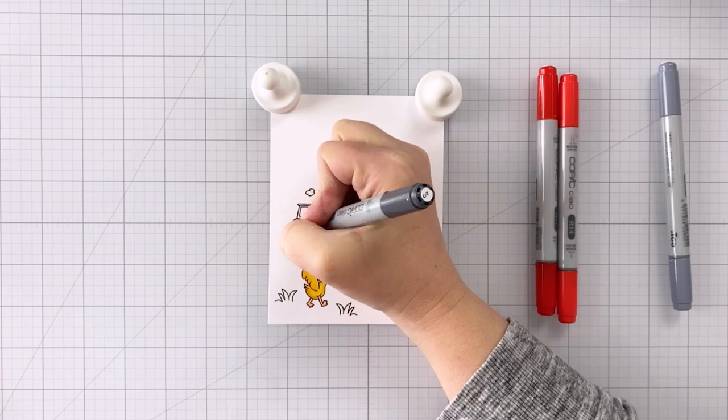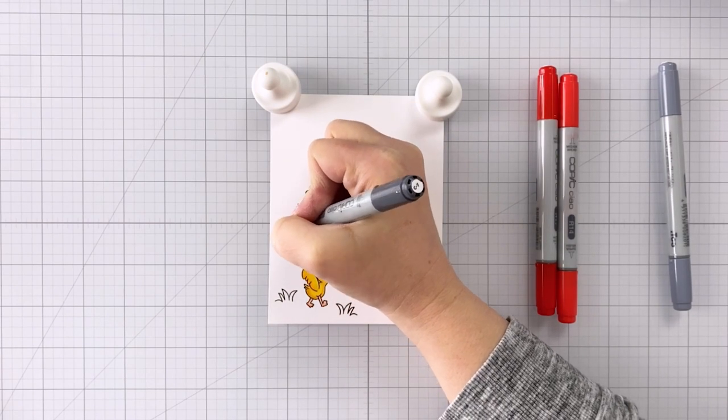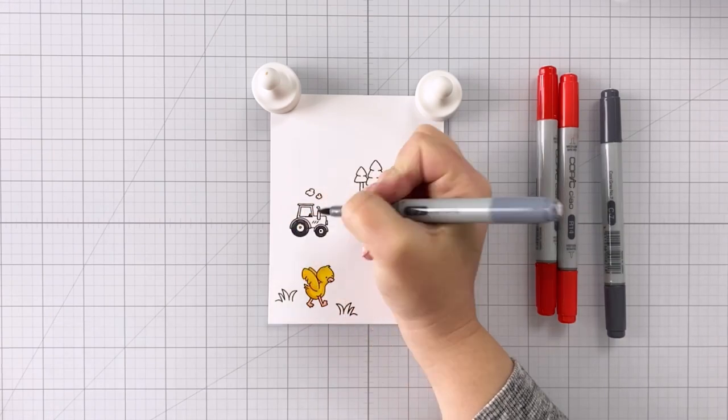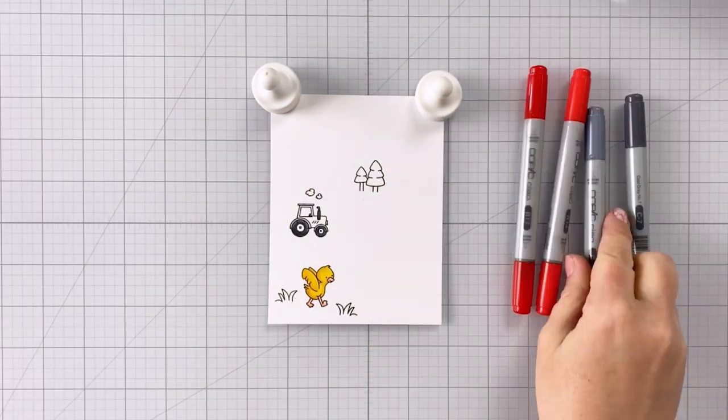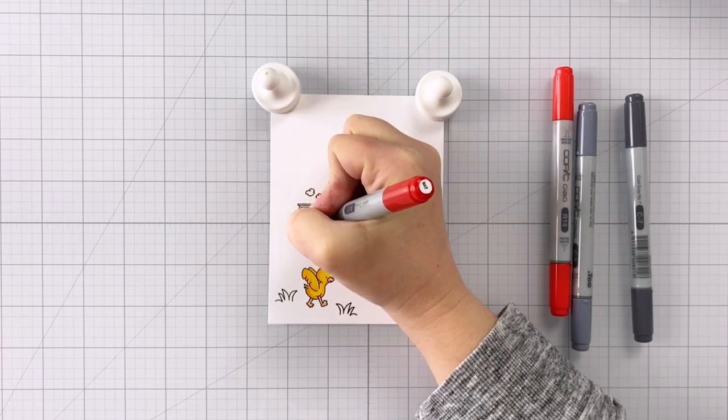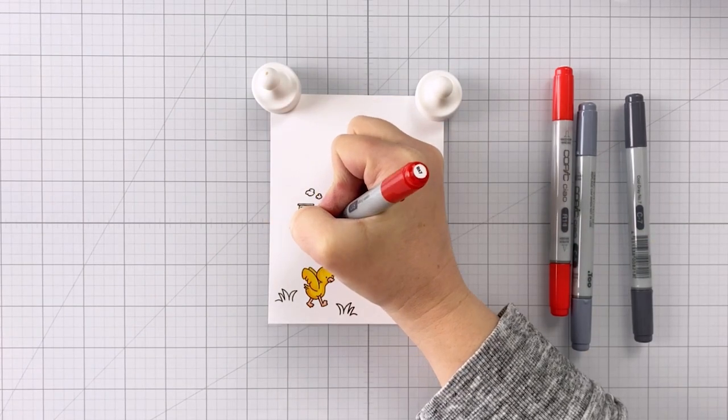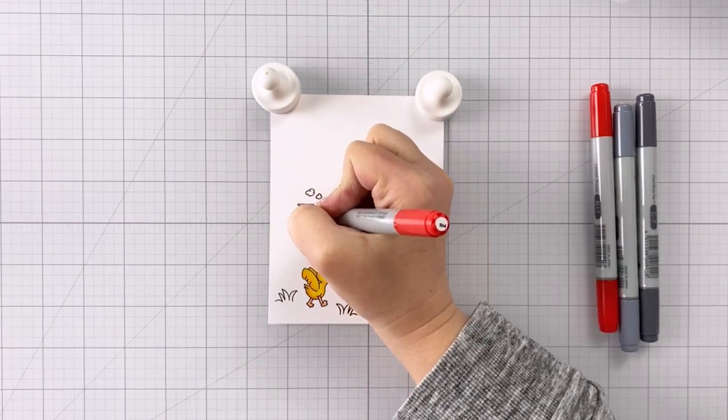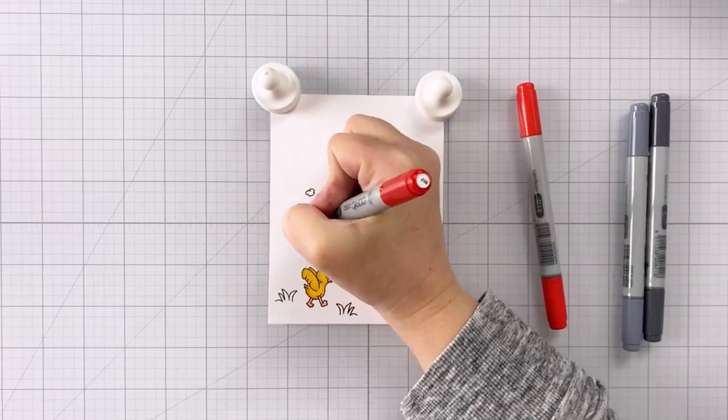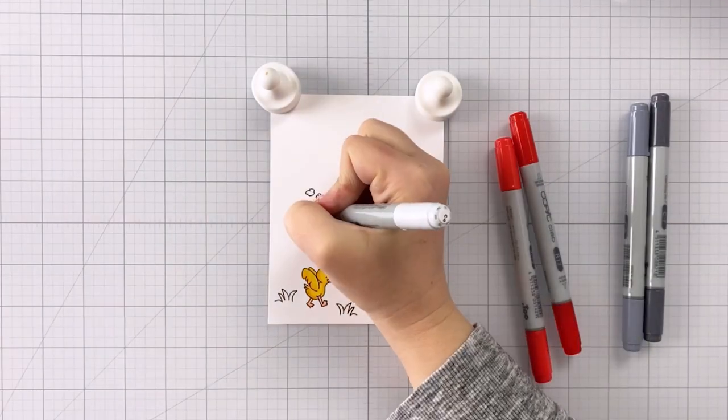For the tractor I'm going to be using R14 and R17 for the body and then some cool grays for everything else, C0, C5, and C7. I generally shy away from using so many markers on a smaller image but here I really wanted to try and capture the shine of a tractor on a sunny day with the sun shining down.